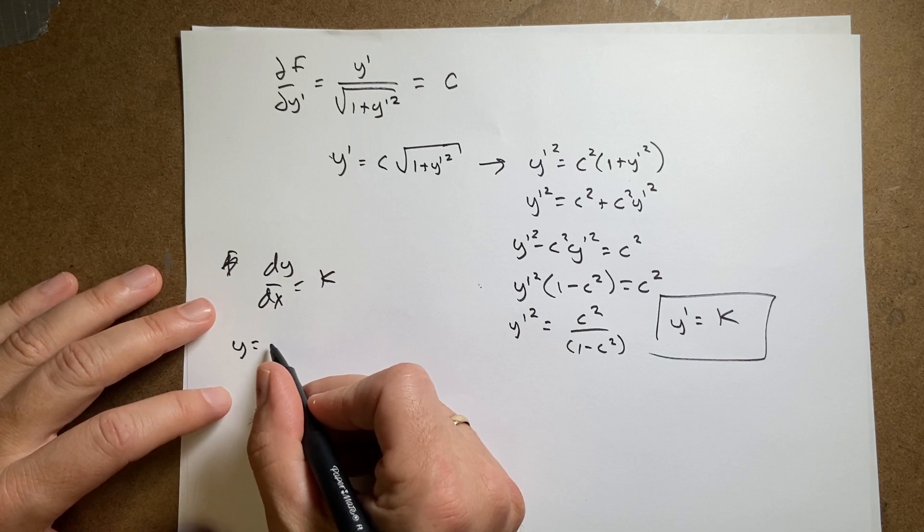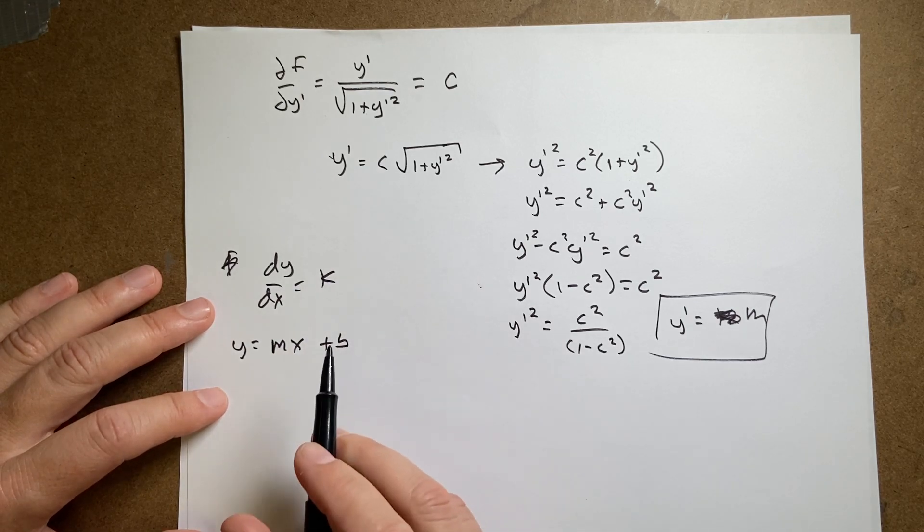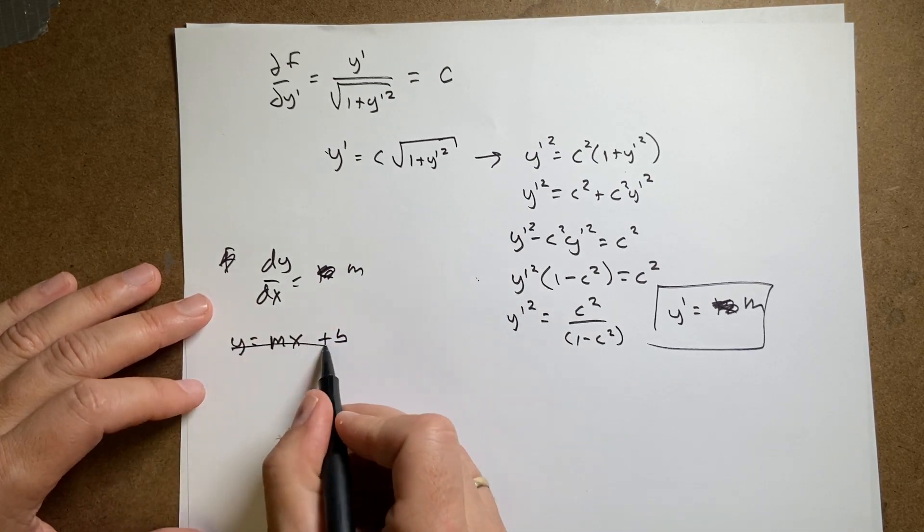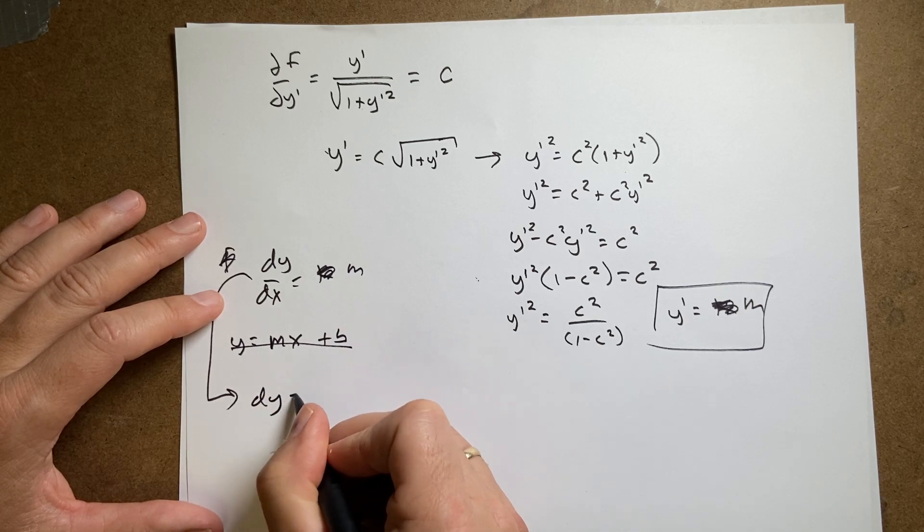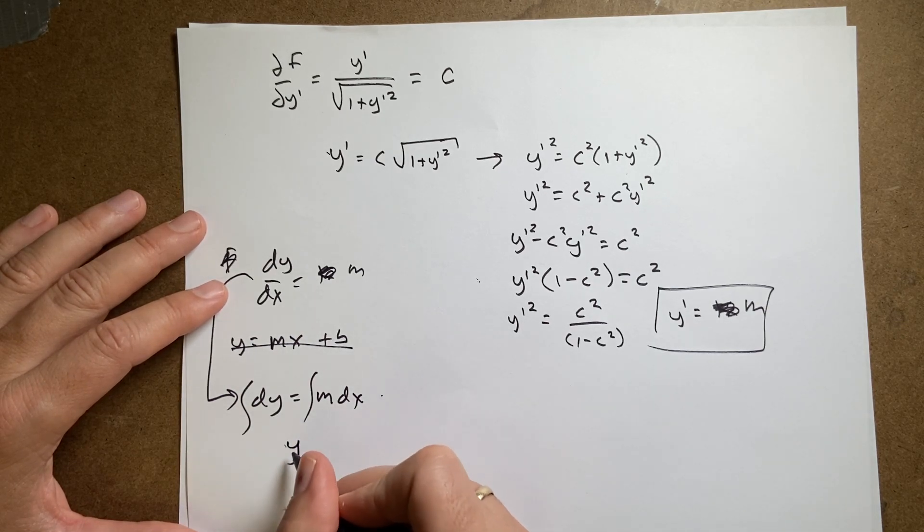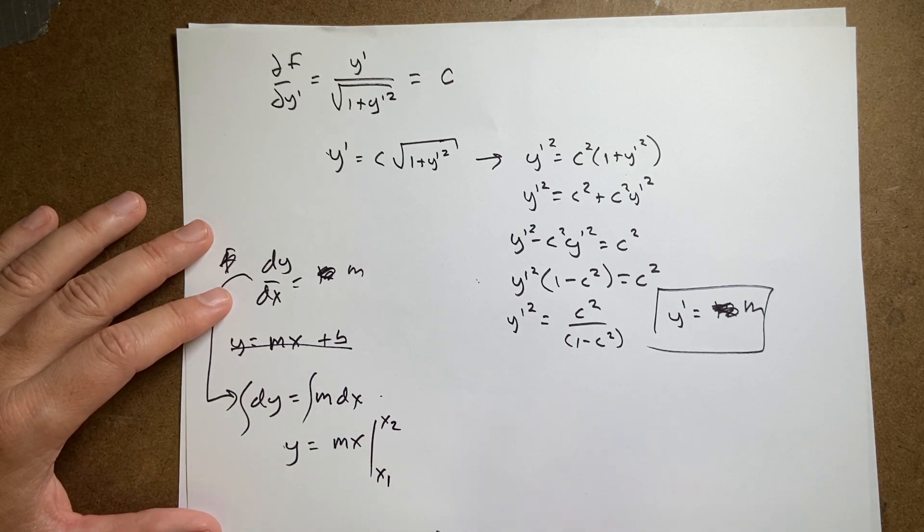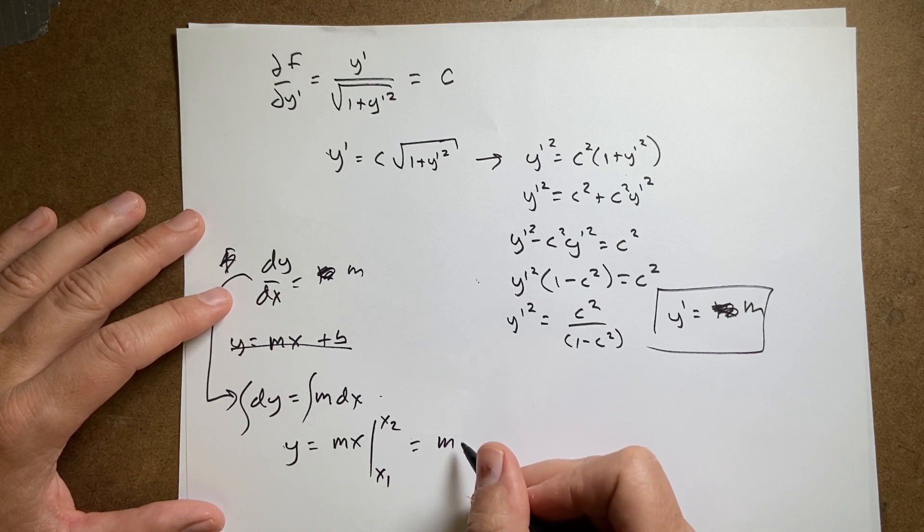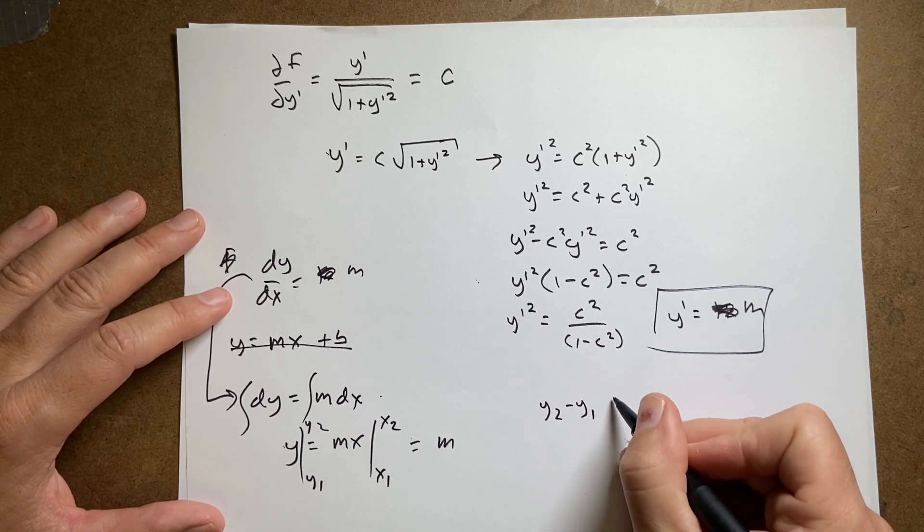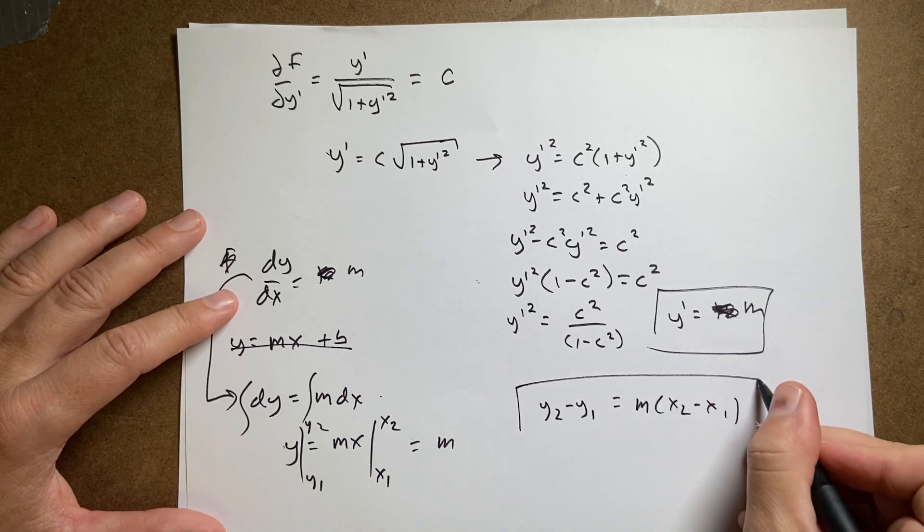y equals some constant, I'll call it now m, actually I should have called that m, that would have been funny, m x plus b, right? And I can get that by integrating both sides. I can actually, let's do that. So let's say dy equals m dx, I integrate both sides, and I get y equals m x from x1 to x2. So that's going to be m, and this is from y1 to y2, so I get y2 minus y1 equals m x2 minus x1.